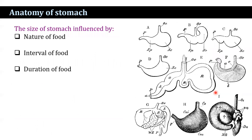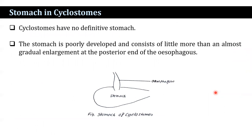The size of the stomach is influenced by the nature of food, the interval of feeding, and the duration of feeding. The stomach varies among different vertebrates. In cyclostomes, there is no definitive stomach. It is very poorly developed and consists of little more than an almost gradual enlargement of the posterior end of the esophagus.